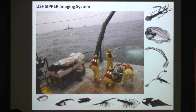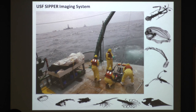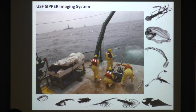This shows a picture from some of those early May cruises out at the oil spill — here's our towed platform with the camera system. Here are some images of some of the zooplankton and fish that we collected, and here are some of the detrital particles that were very abundant in the area I'm going to show you data for.